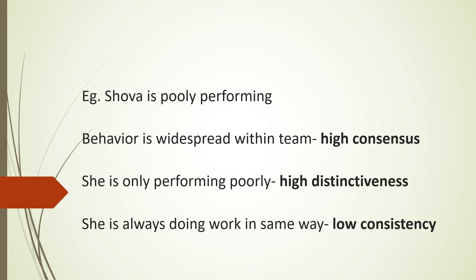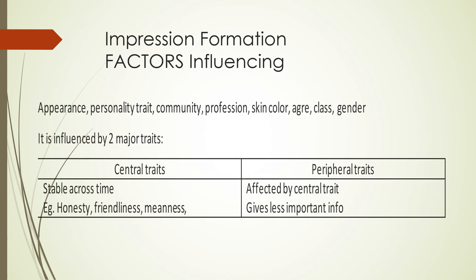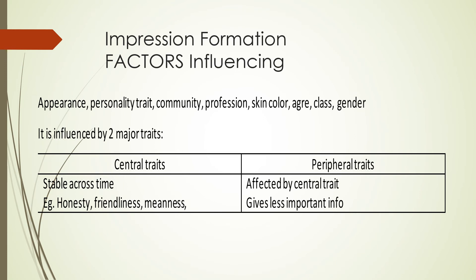For example, Soha is poorly performing. The behavior is widespread within the team, which is high consensus — everyone knows it. She is only performing poorly in this area, which makes it high distinctiveness. She is always doing the work in the same way, which shows low consistency. Regarding impression formation, factors influencing impression include appearance, personality traits, community, profession, skin color, age, class, and gender. Impression is influenced by two major types of traits: central traits (stable across time, e.g., honesty, friendliness, meanness) and peripheral traits (affected by central traits, giving less information).